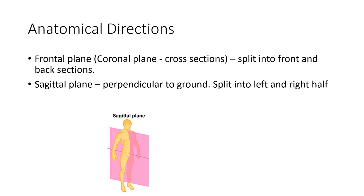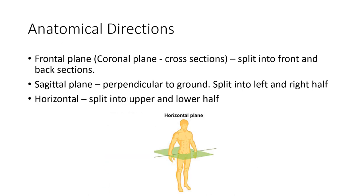Next, we have the sagittal plane. This is perpendicular to the ground, splitting the person into left and right portions. Last, we have the horizontal plane, which splits the person into an upper portion and a lower portion. These planes become more important as we take a look at cross-sections of the brain.